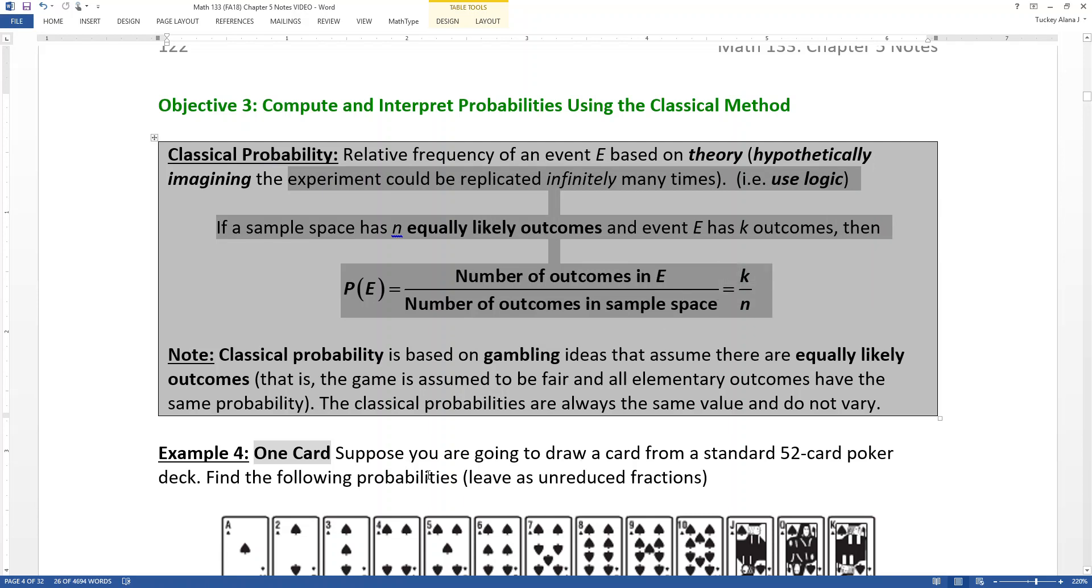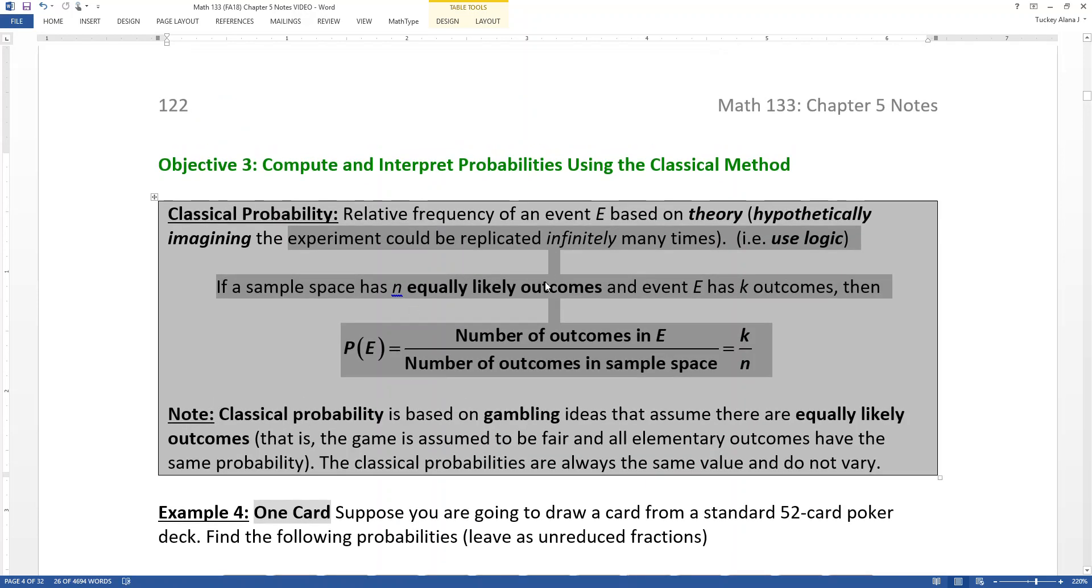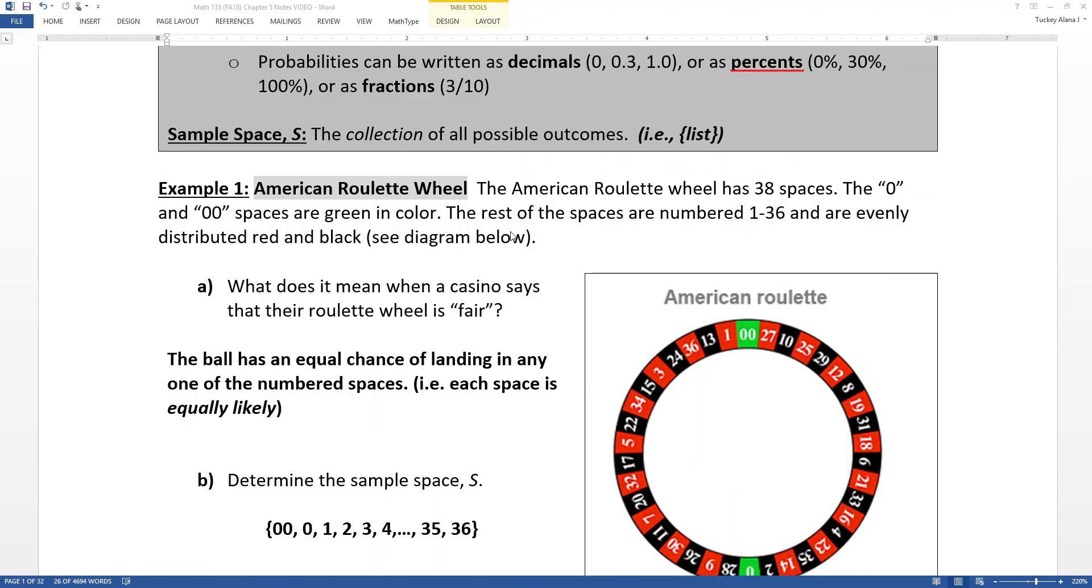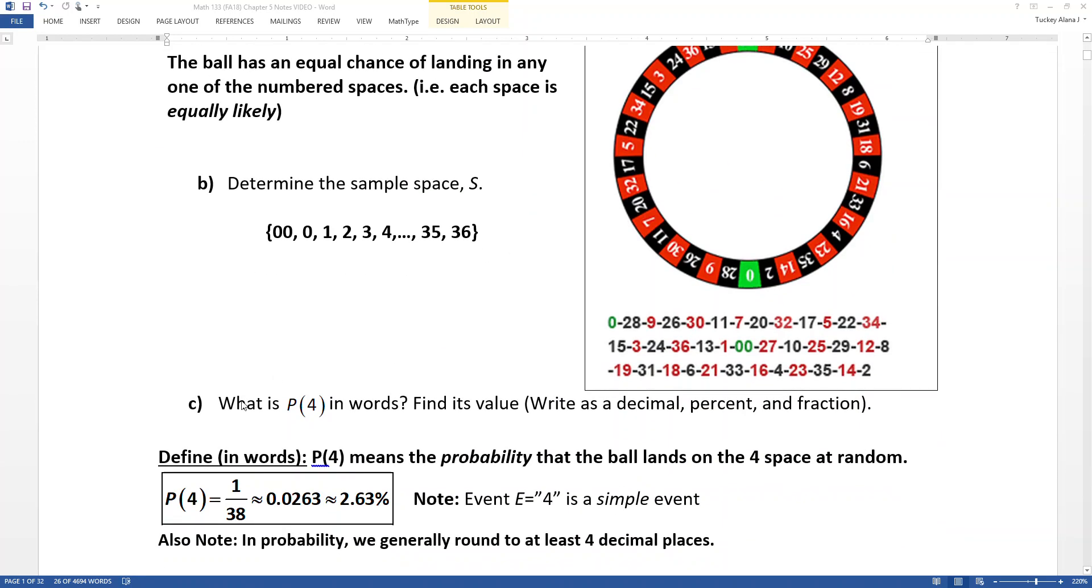Now to give you an example of how this works before we get into that next example, I want to go back to the first example from this section. So I'm going to scroll back up to this example, the American Roulette Wheel. And you can see right here in Part C, when we wanted to find the probability of 4, we didn't actually get out a wheel, put a ball into it, and start spinning it around time after time after time to get some percentage of times that would land on 4 divided by all the times it was spun.